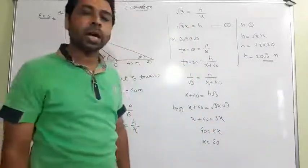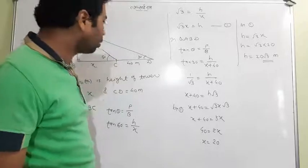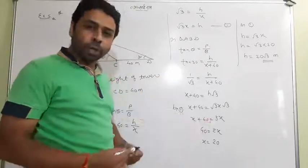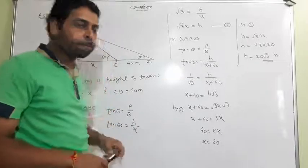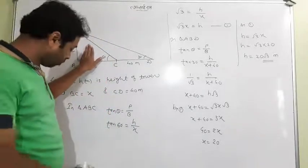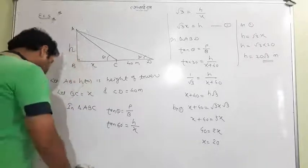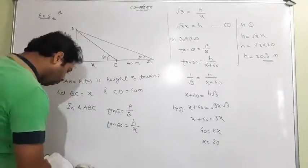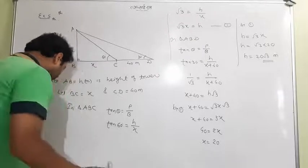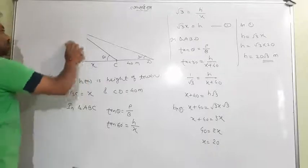So 20√3 meters is the height of the tower. This is an important question — the procedure was straightforward, but the problem statement and diagram setup are very important for the exam. Now let me wrap up and move on to Example 6.